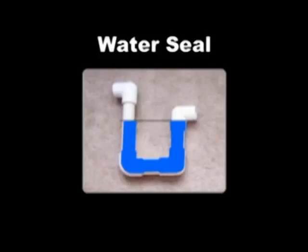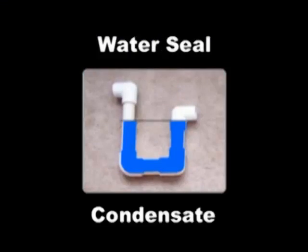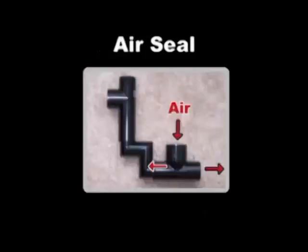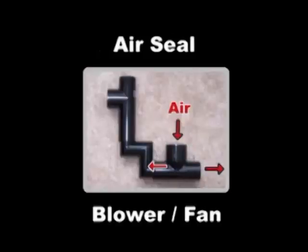The P-trap requires water from an unreliable source to form a drain seal — condensate from the cooling coil. The Cost Guard device uses air produced by the blower or fan to form a seal and eliminates all the problems caused by the failure-prone condensate P-trap water seal.